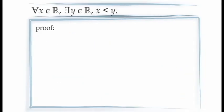Let's look at another example. We're going to prove that there is no limit to how large the real numbers can get — in other words, given any real number x, we can always find at least one real number y that is larger than x. This statement begins with a universal quantifier, so we need to introduce x as an arbitrary constant into our proof by saying: let x be an arbitrary real number. Next, we see that for this value of x, we need to demonstrate that there's at least one value of y that's larger than x. For this we need existential generalization, so we need to assign a specific value to y.